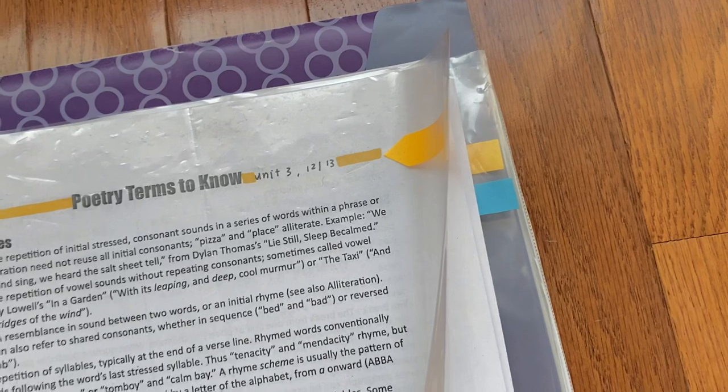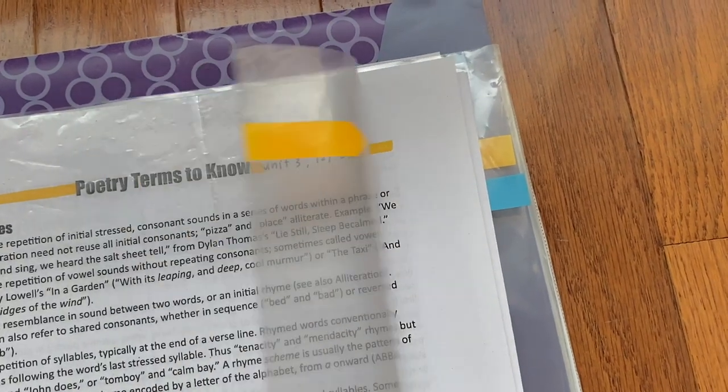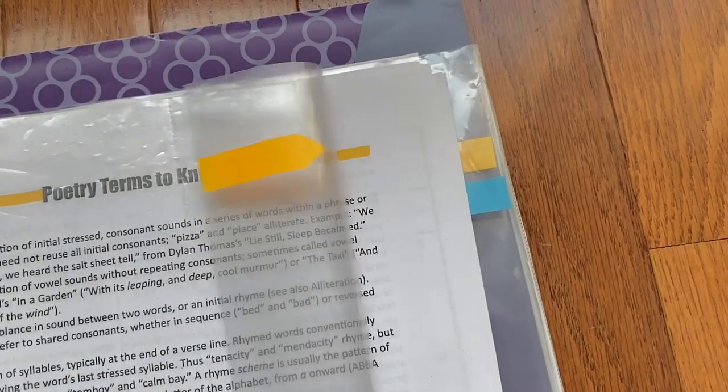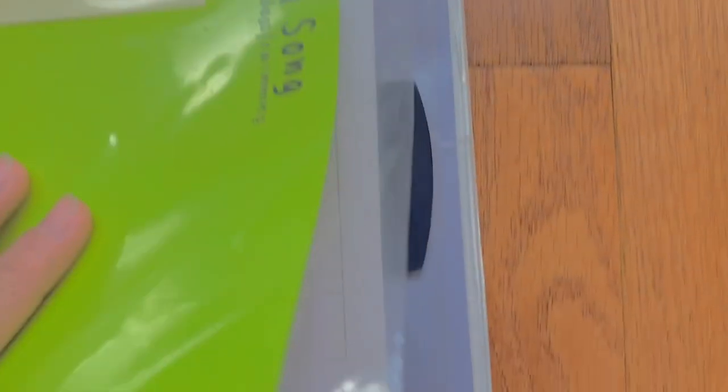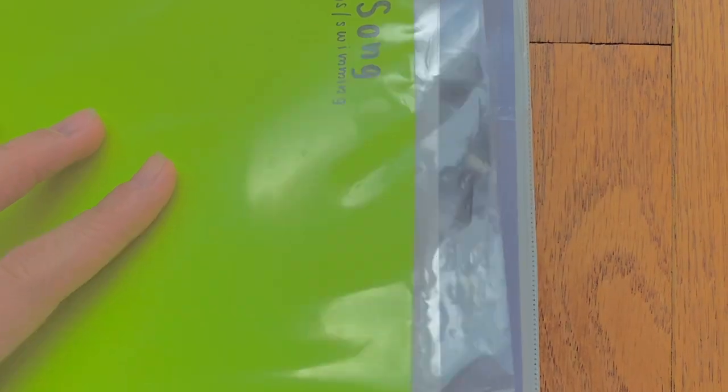We're going to start off with how you can organize your binder. The first way you can organize your binder is to avoid using folders, pockets, or any type of divider with a built-in folder. Having a folder encourages you to shove random papers into it, which makes your binder disorganized because you don't know what paper is where and which subject is where.